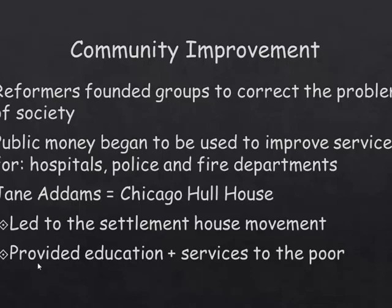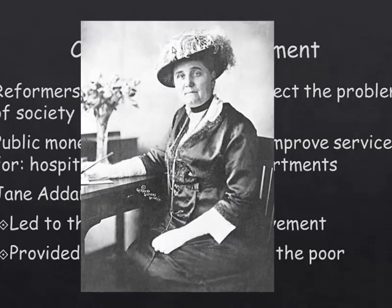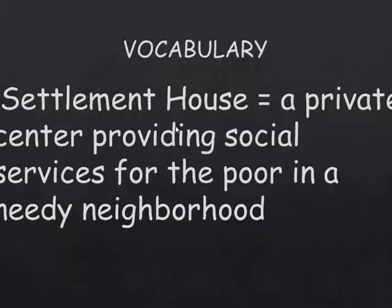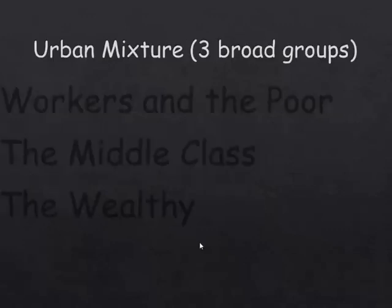Settlement houses were really cool places for immigrants to go so that their kids could learn American ways. They allowed people to stay for a certain period of time, helped find employment, and helped people learn English — a really easy way for immigrant groups to get their start in America. They provided education and services to poor people. Jane Addams was a great woman — don't forget her.